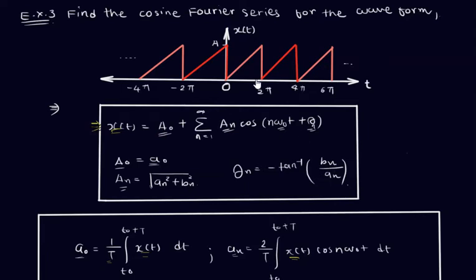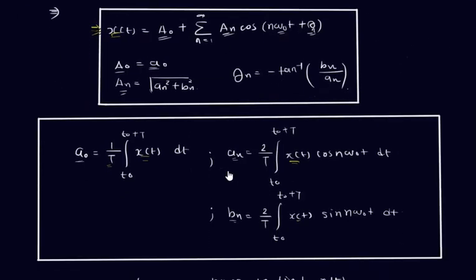Now, considering this function, we need to find A0, An, and θn. For each term, we need the time period T — where the graph starts and where it ends. To find A0, we need T0, T0+T, T, and x(T). Similarly, for An we need T, x(T), and ω0.